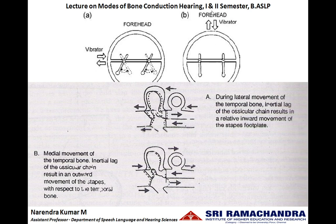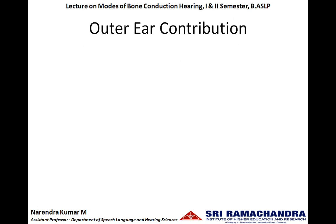When the bone vibrator is placed at the forehead, the movement of the temporal bone is front and back rather than lateral-medial, resulting in zero or minimal movement of the ossicles. Therefore, cochlear activity will not be enhanced. This is the inertial movement of the ossicle which contributes to bone conduction hearing from the middle ear.